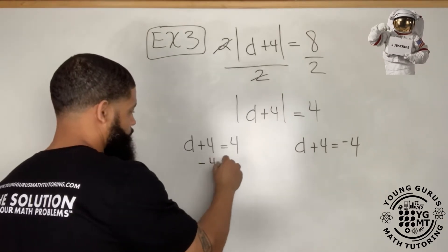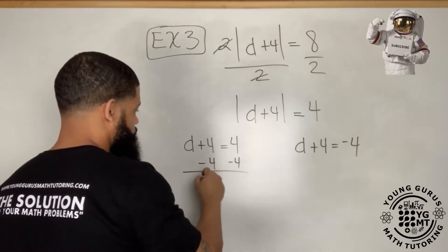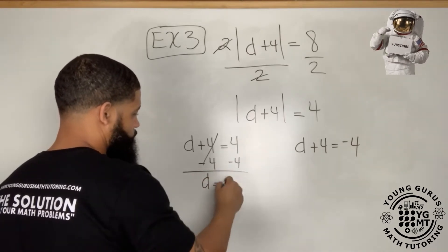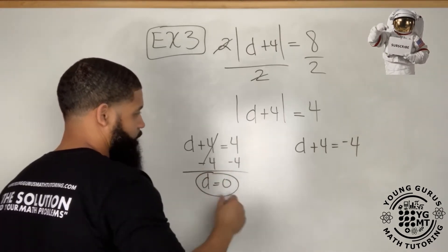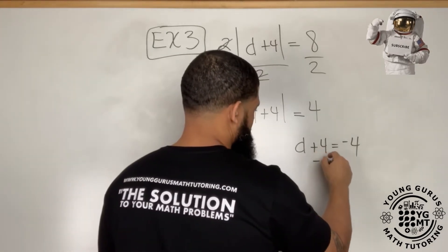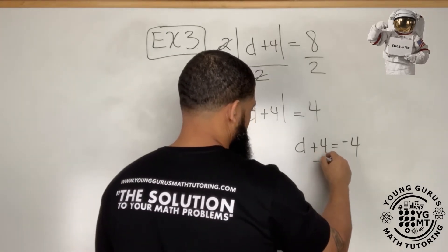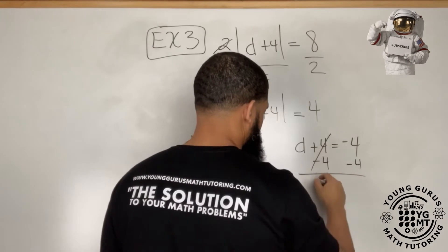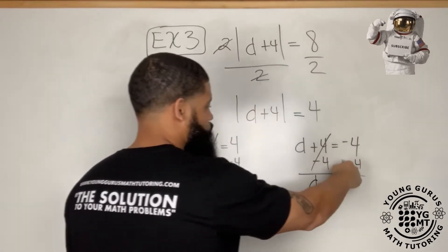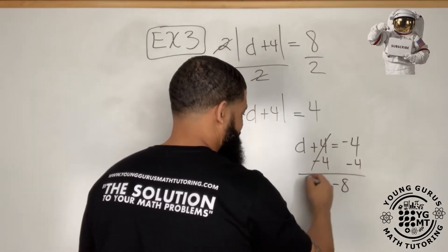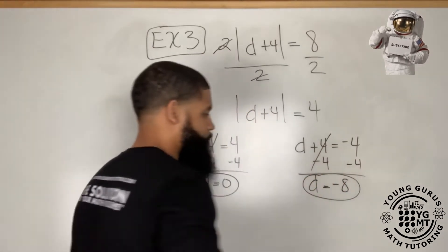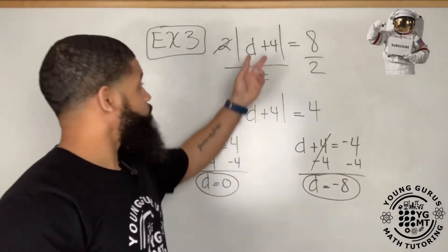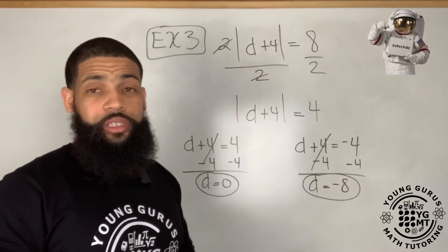For the first equation, subtract four from both sides: d equals four minus four, which is zero. For the second equation, subtract four from both sides: d equals negative four minus four, which is negative eight. We can always substitute these two values back into the original equation to verify.